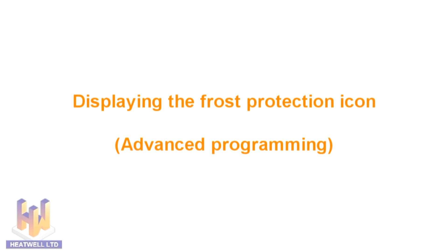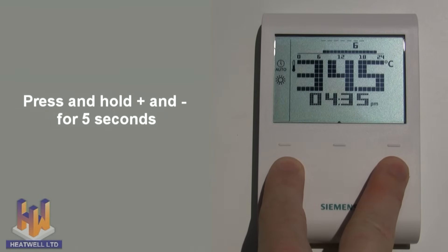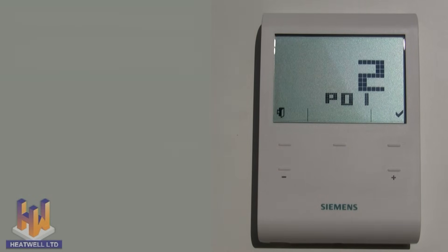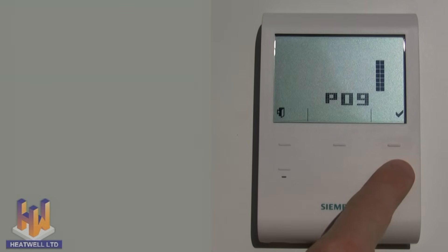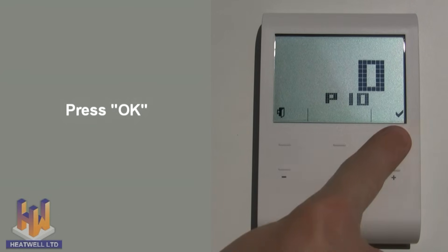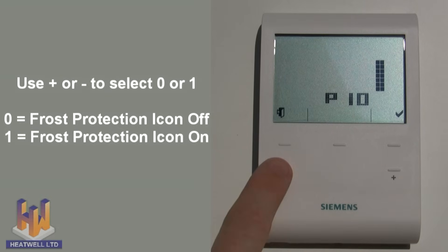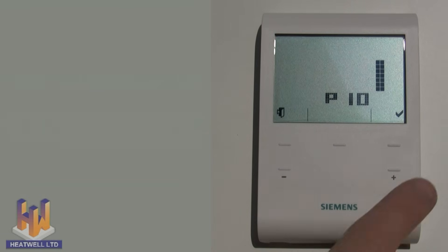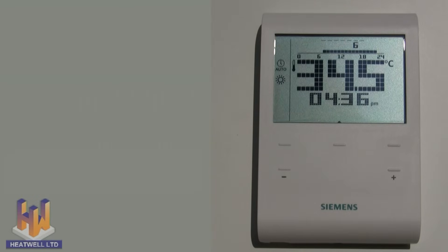Displaying the frost protection icon. To show the off or frost protection icon, go to the advanced settings menu by pressing the plus and minus buttons for 5 seconds, then let go. P01 will show. Use the plus button until you see P10, then press the OK button. Now use the plus or minus button to change between 0 and 1 — 0 means the frost protection icon will not show, and 1 means it will show. In this case we will select 1. Press OK to confirm and then press the mode button to exit. The off or frost protection icon will now show when the unit is activated by very low temperatures or turned off.